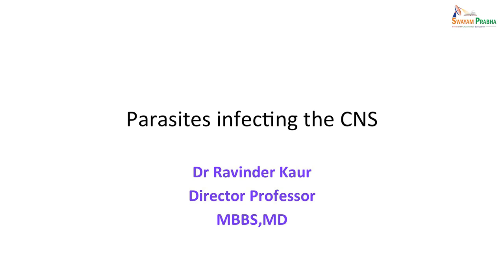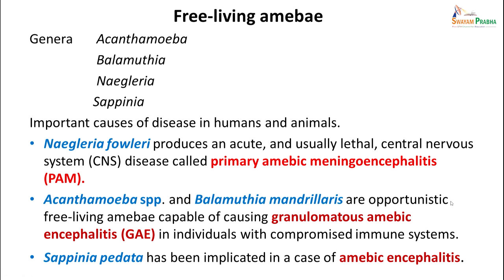We will be talking about parasites infecting the CNS today. There are few parasites which are mainly free-living amoebae of the genera Acanthamoeba, Balamuthia, Naegleria and Sappinia, which have been discovered to be causing serious infections like granulomatous amoebic meningoencephalitis, which is a serious and fatal disease. They are important causes of disease in humans and animals.